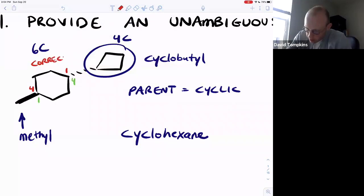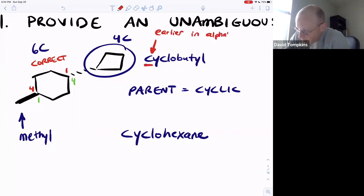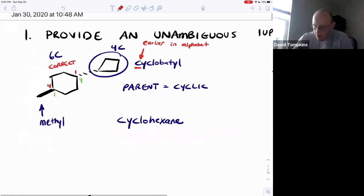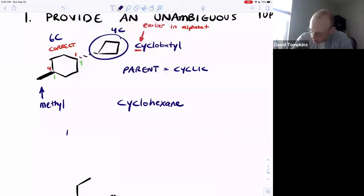We give the same total numbers either way, one and four. But now, if you have to break that tie, you give the lower number to the compound that comes earlier in the alphabet, where the substituent starting with C gets number one. So putting it all together, we would alphabetize it and say 1-cyclobutyl-4-methyl-cyclohexane. It's all one word.